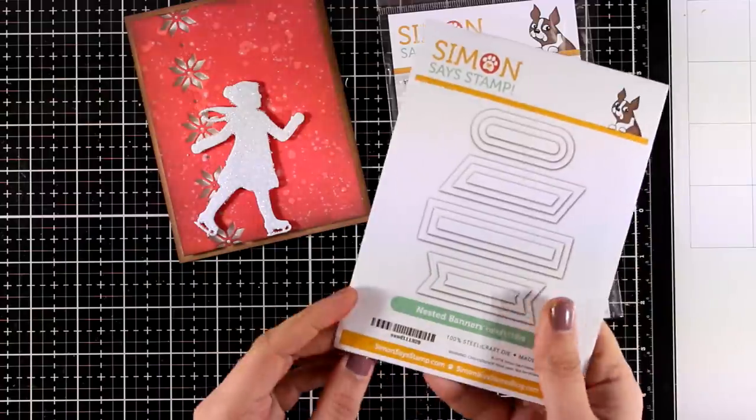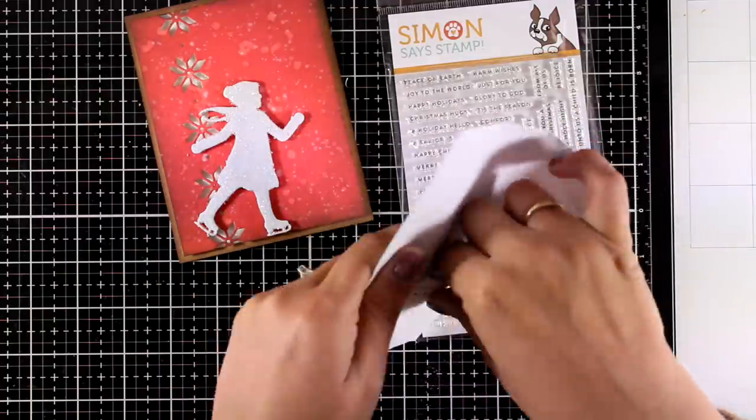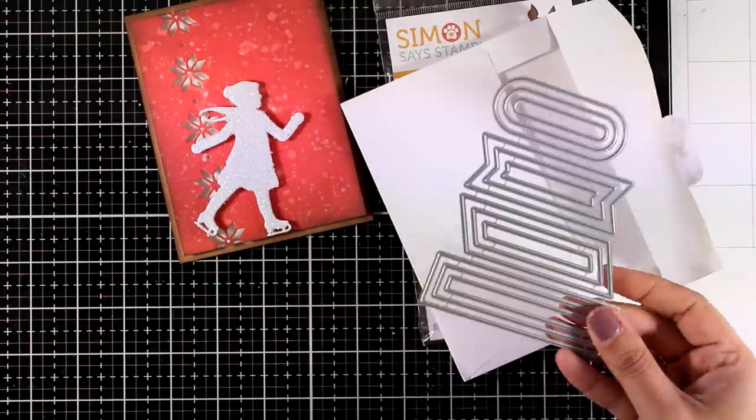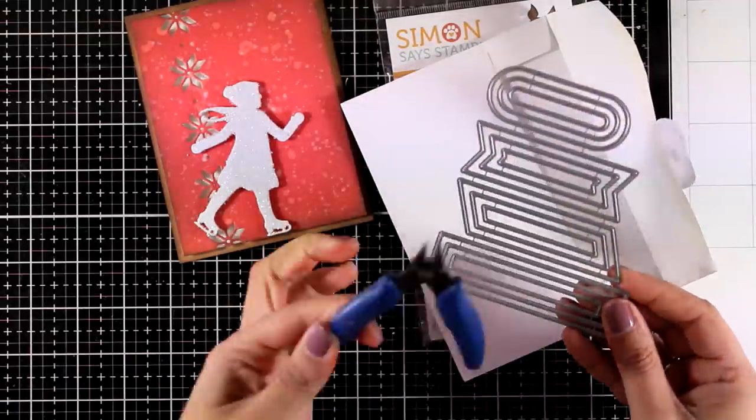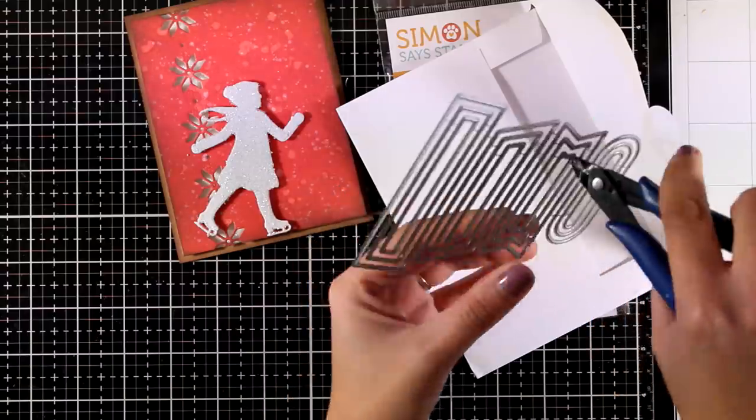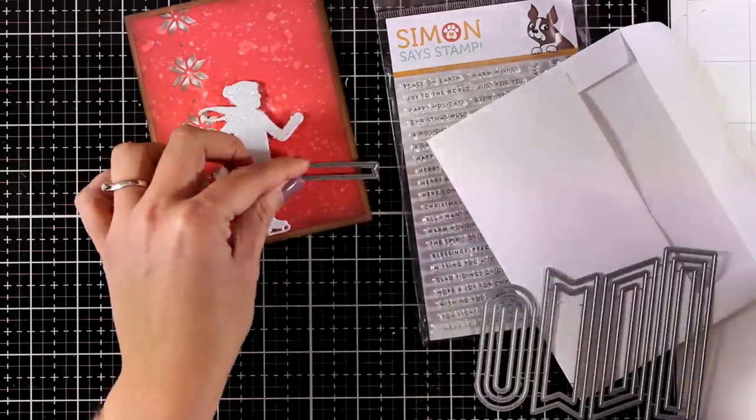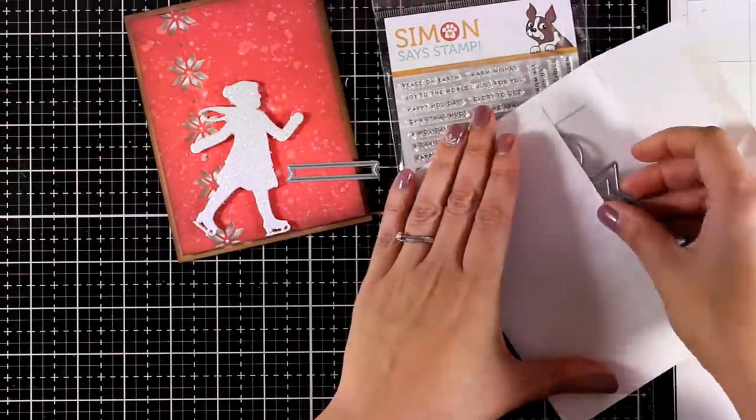For my sentiment I'm going to use the Nested Banners along with a sentiment from the Tiny Words Christmas stamp set and these Tiny Banners is packed with dies as you can see. I'm going to use the tiniest of the ones with the fishtail. I am going to cut it out from craft cardstock.